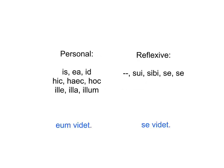In Latin, for third person pronouns, here are some examples of personal pronouns — this is not the same person as the subject. For reflexive pronouns for third person, we have a special one: blank, sui, sibi, se, se. It's just like tu, tui, tibi, te, te, except that you have an S instead of a T and there's no nominative. So if you have the sentence 'se vidit,' this refers to the same person as the subject — he sees himself. Only one person is involved here.